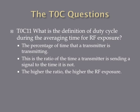What is the definition of duty cycle during the averaging time for RF exposure? A duty cycle is the percentage of time that a transmitter is transmitting — the ratio of time a transmitter is sending a signal versus the time it is not. The higher the ratio, the higher the RF exposure.